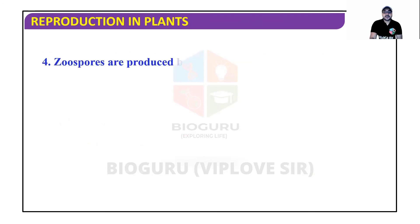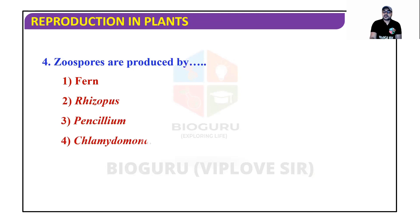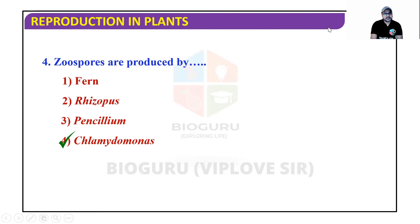MCQ: Zoo spores are produced by — fern, Rhizopus, Penicillium, or Chlamydomonas? Zoo spores are motile, and as we discussed, the correct answer is Chlamydomonas. So I think some things about asexual reproduction have become clear to you.